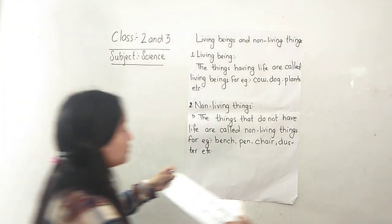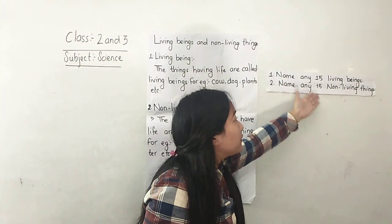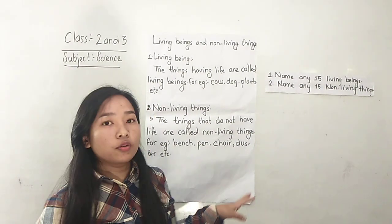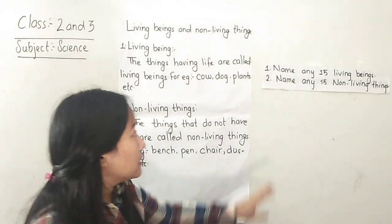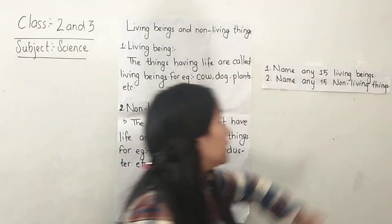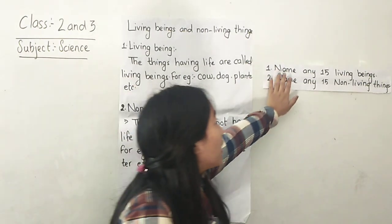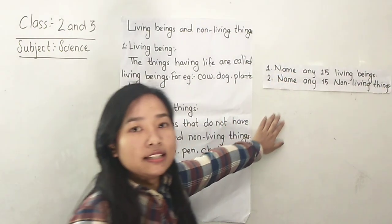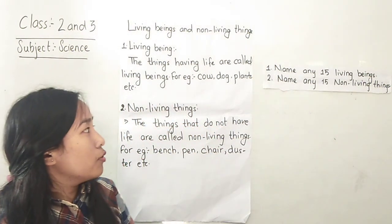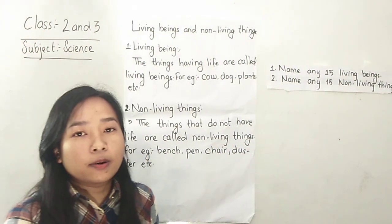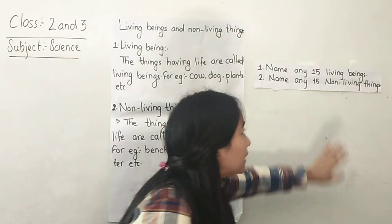I have some assignments for you. Name any 15 living beings surrounding your home — for example, cow, insects, flies, etc. Also name any 15 non-living things surrounding your house — for example, whiteboard, bag, paper, books, pencils. You can write anything. Thank you.